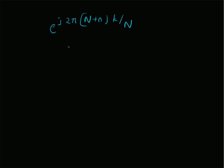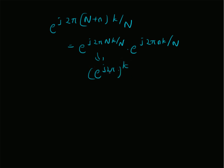Now, we can easily decompose this exponential function as e power j 2 pi capital N into k by capital N, multiplied by e power j 2 pi small n k by capital N. And clearly, these N's cancel each other and then we have e power j 2 pi into k, and e power j 2 pi is actually equal to 1. So this is actually equal to 1. Therefore, this term is indeed equal to e power j 2 pi small n k by capital N. That is, having this capital N in the sum is equivalent to multiplying this e power j 2 pi n k by capital N with 1.